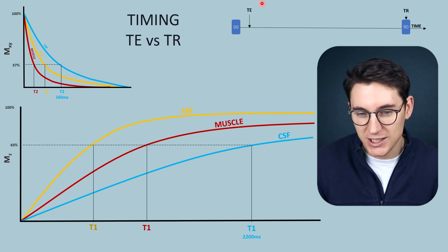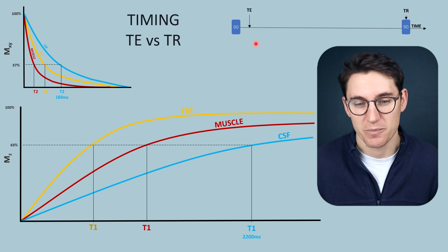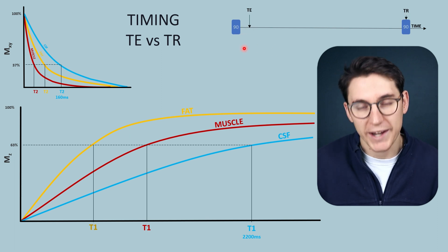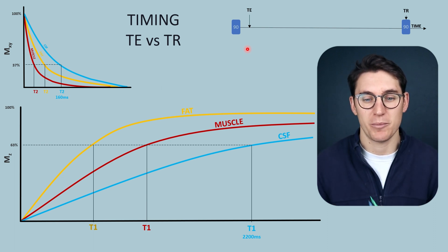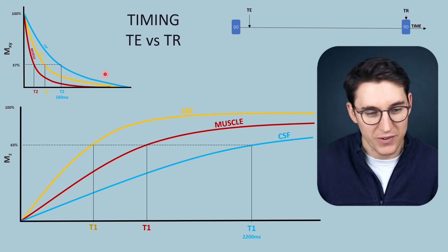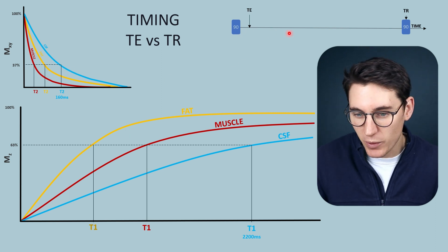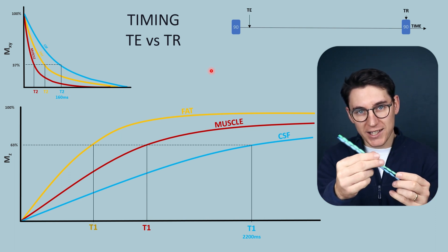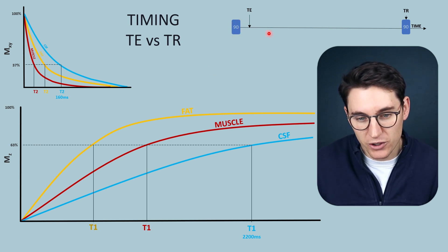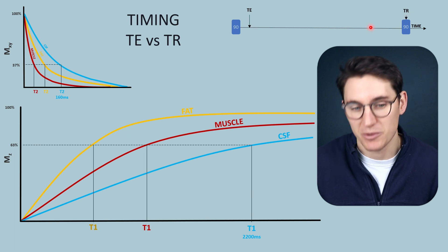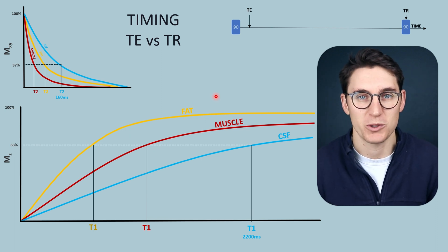We have a basic pulse sequence with two parameters we can change: the time of echo (TE) and the time of repetition (TR). The time of echo is the amount of time we wait after the RF pulse to sample the transverse magnetization signal. Changing the TE will highlight the T2 differences within tissues. The time of repetition is the time between the first RF pulse and the next, and it determines the amount of T1 contrast that contributes to our images.